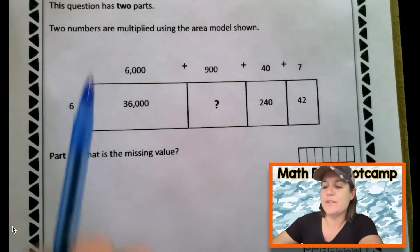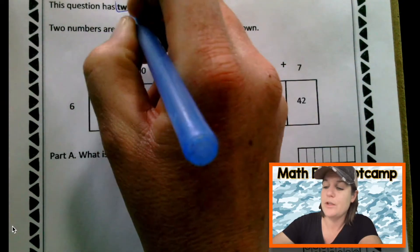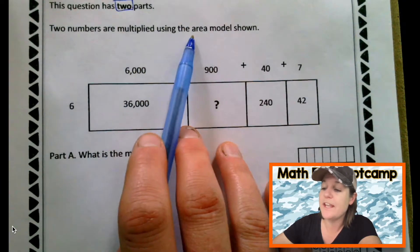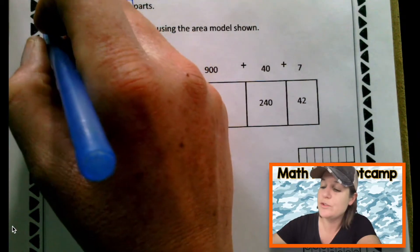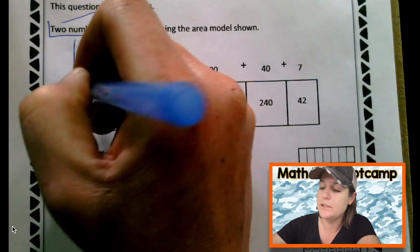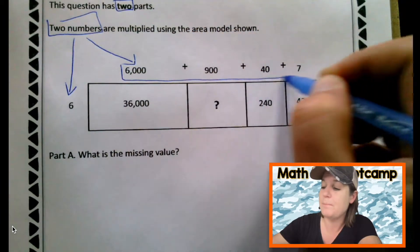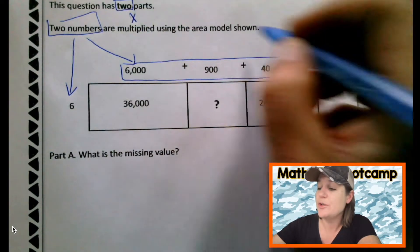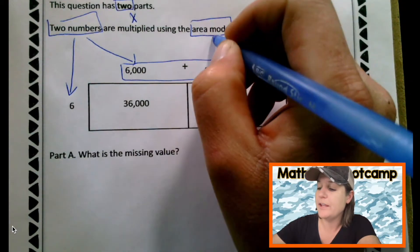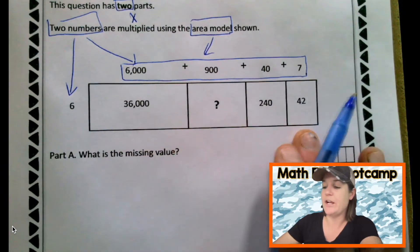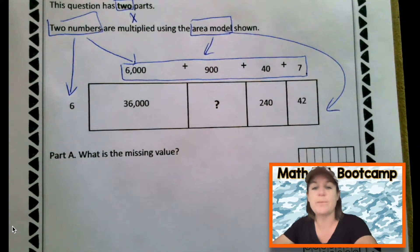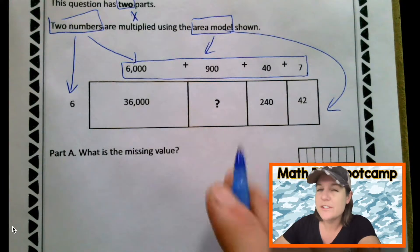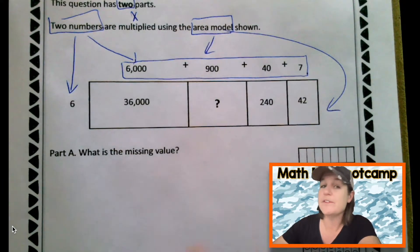Let's annotate this question. So it says, this question has two parts. And we will answer both. Two numbers are multiplied using the area model shown. So, we've got two numbers, which would be here and here. These numbers combined. They are being multiplied using the area model shown. So this whole thing down here is the area model. You can even write there is the area model. Now, an area model is a strategy for how you can multiply. If you have not learned the area model, you should still be able to be successful in thinking about this problem. Focus on what you know.